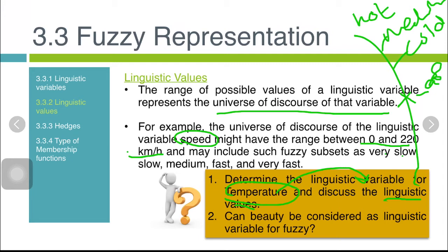Next question: can beauty be considered as a linguistic variable for fuzzy? If you need fuzzy values, it cannot be considered as a linguistic variable because we don't have the exact range for the variable beauty. Meanwhile, if we talk about temperature, we have the range, for example, 0 degrees Celsius until 35 degrees Celsius. But for beauty, do we have any range or universe of discourse? If not, then you have to consider that it cannot be applied to fuzzy.